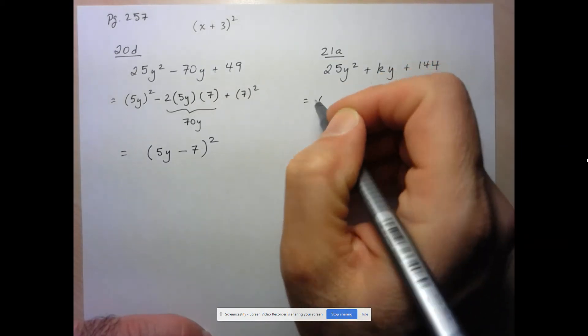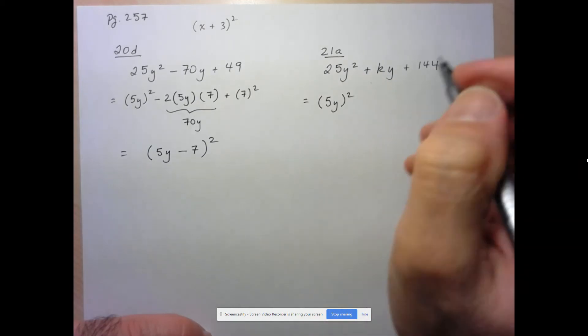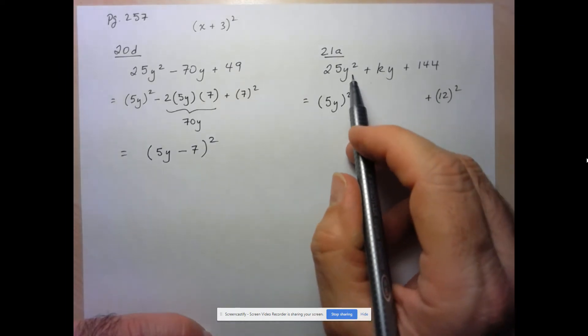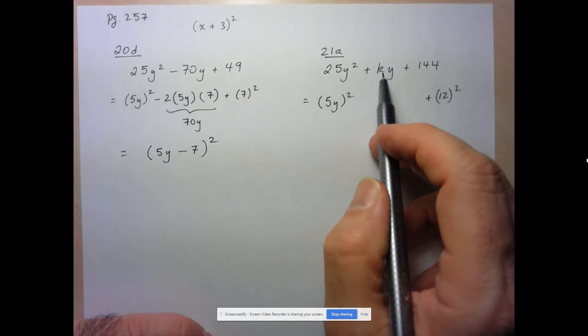So this again, similar to the other one, is 5y all squared. And this here is going to be plus 12 squared. So the only way for this to be a perfect square trinomial is if this expression here is twice the product of first and last.